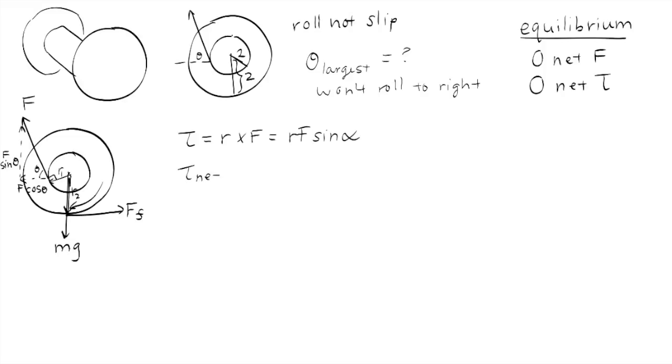So our torque net is equal to 0. And if we define rolling to the right as positive, then we have R1 times F minus R2 times the force of friction. In other words, the torque caused by us must be equivalent to the torque caused by the friction.